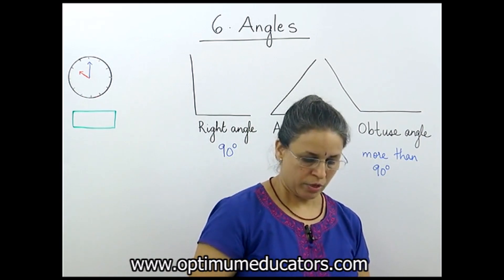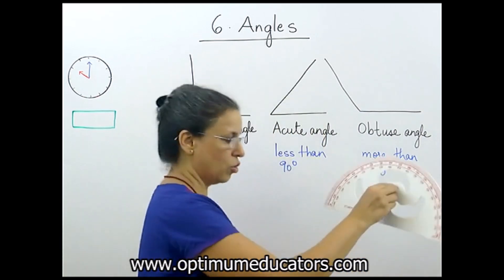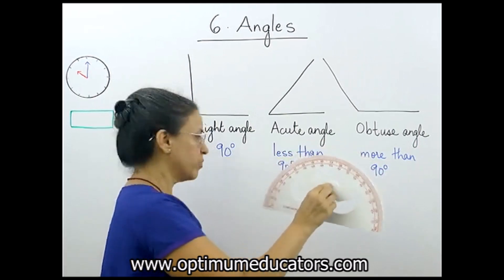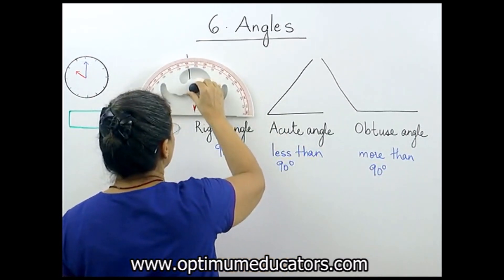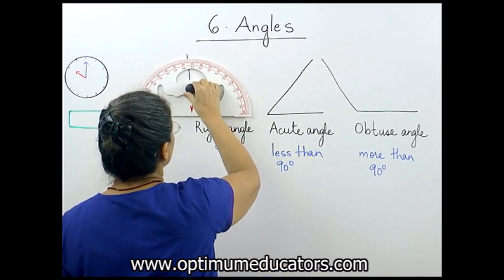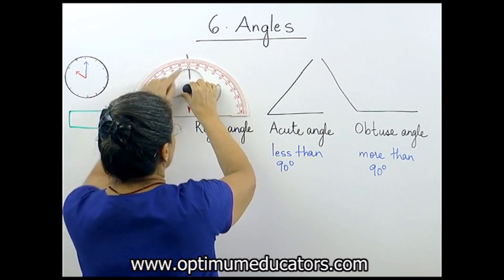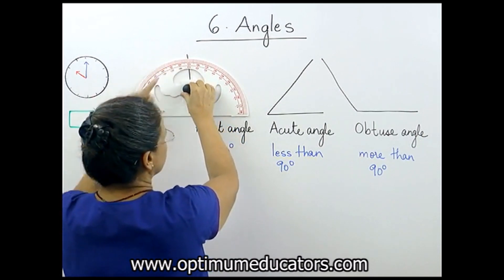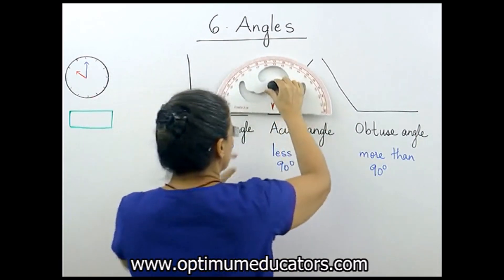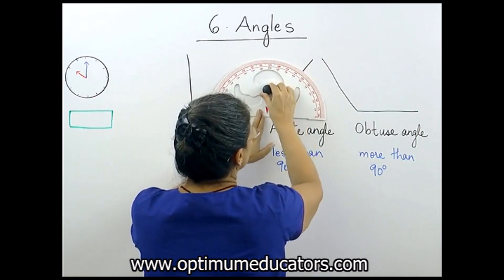You have your protractor. You can keep it here and you can see this is on a straight line, so it is 90 degrees. Can you see 90 over here? Now here, let us see. This shows